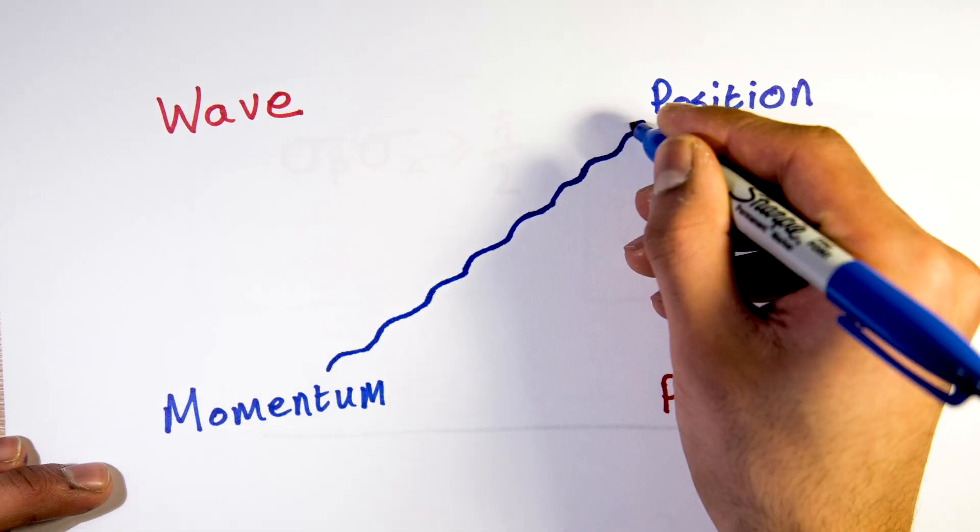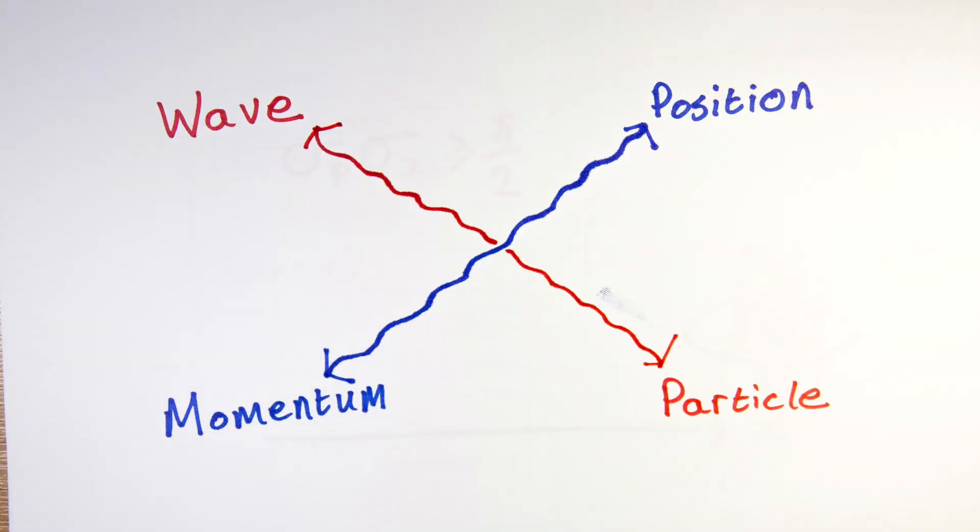The principle of complementarity simply states that particles possess certain properties that arise in pairs, such as wave-particle duality and momentum-position.